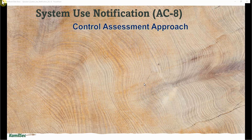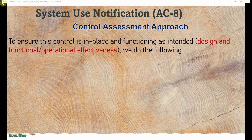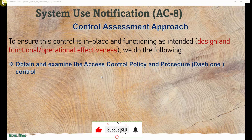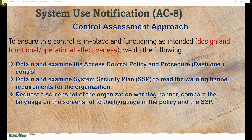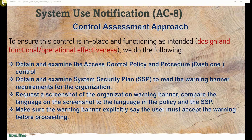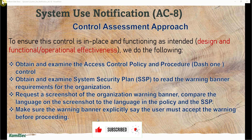Now let's look at the control assessment approach to ensure this control is in place and functioning as intended — covering both design and operational effectiveness. We obtain and examine the access control policy and procedure (the dash-one control). We obtain and examine the System Security Plan (SSP) to read the warning banner requirements for the organization. We request a screenshot of the organization's warning banner, compare the language on the screenshot to the language in the policy and the SSP, and make sure the warning banner explicitly states that the user must accept the warning before proceeding.